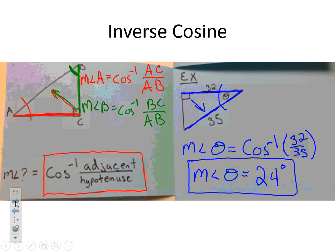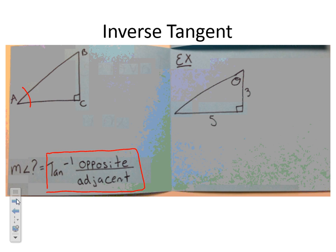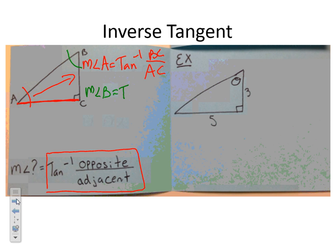Moving on to inverse tangent. We're working with inverse tangent to find the measure of angles using opposite over adjacent. So the measure of angle A is going to be the inverse tangent of the opposite, BC, over the adjacent — the one that's touching and not the hypotenuse — which is AC. The same thing for the measure of angle B: inverse tangent of the opposite, AC, over the adjacent, BC.